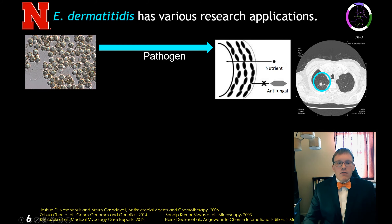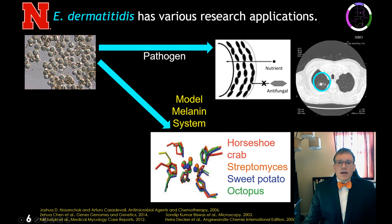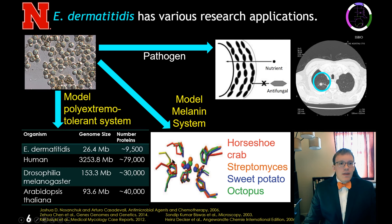Starting with the motivation and research questions, Exophiala has three main research applications. The first is as a pathogen. The second is as a model melanin system. We can see here the active site of tyrosinase, the key enzyme in melanogenesis. Across four different species, tyrosinase has a fairly consistent structure, at least in the active site. Exophiala can also serve as a model polyextremotolerant system.